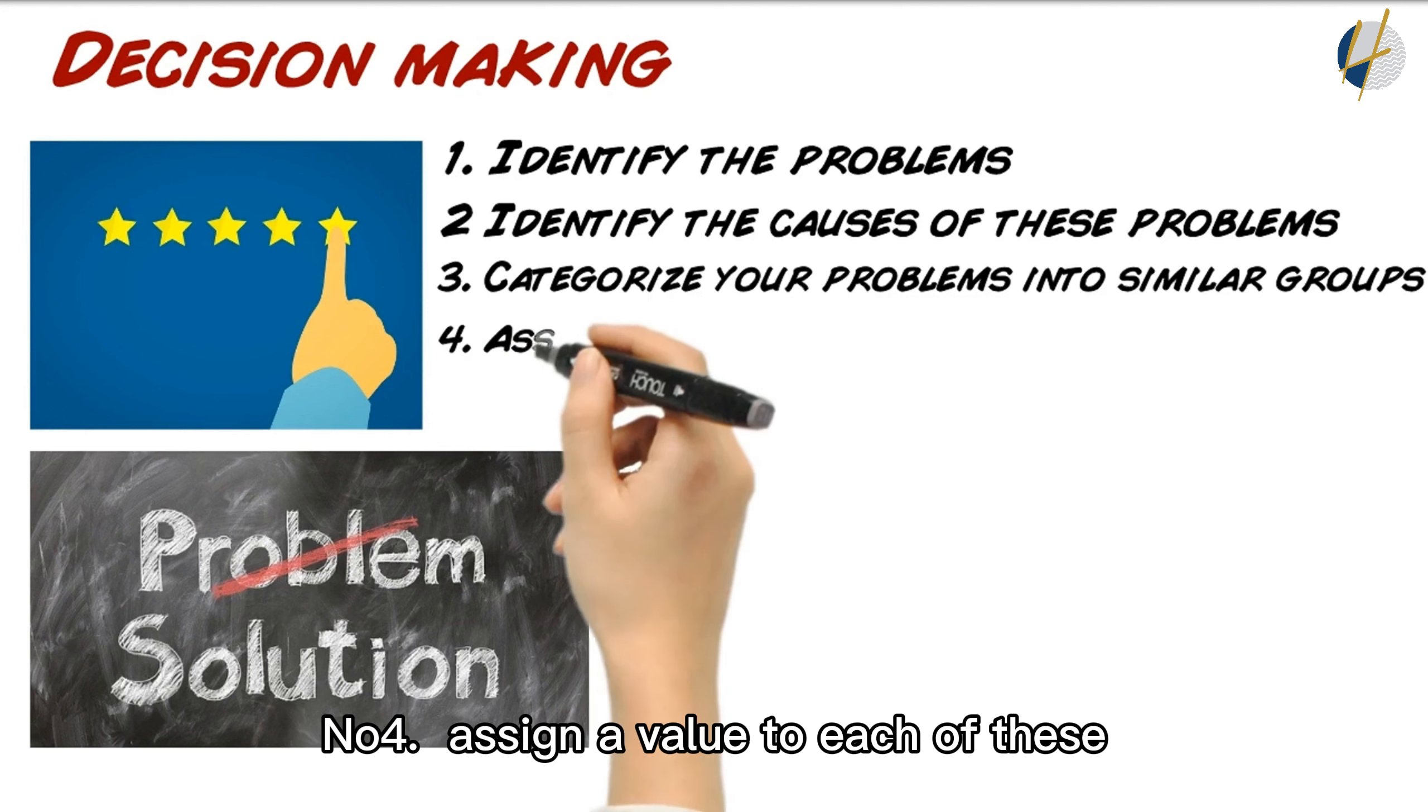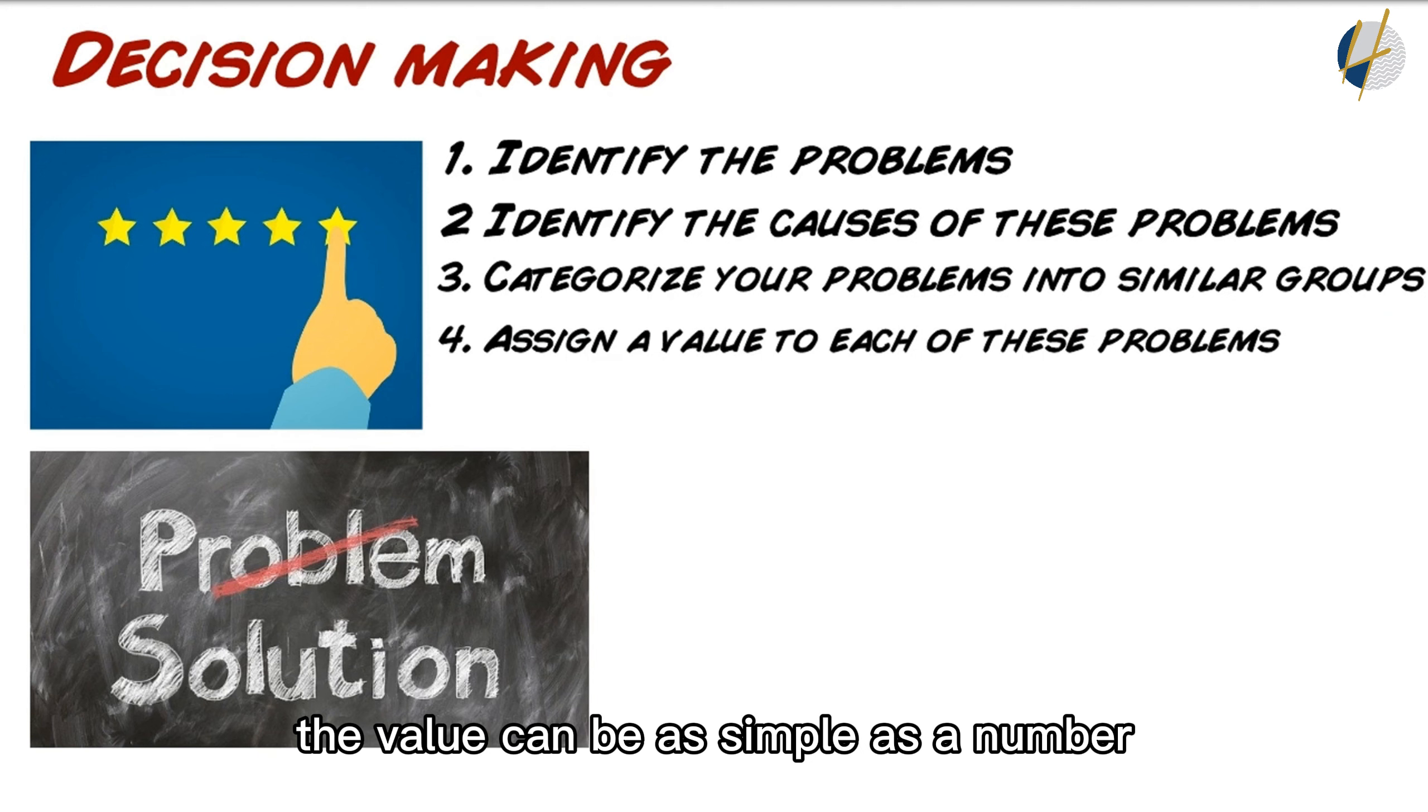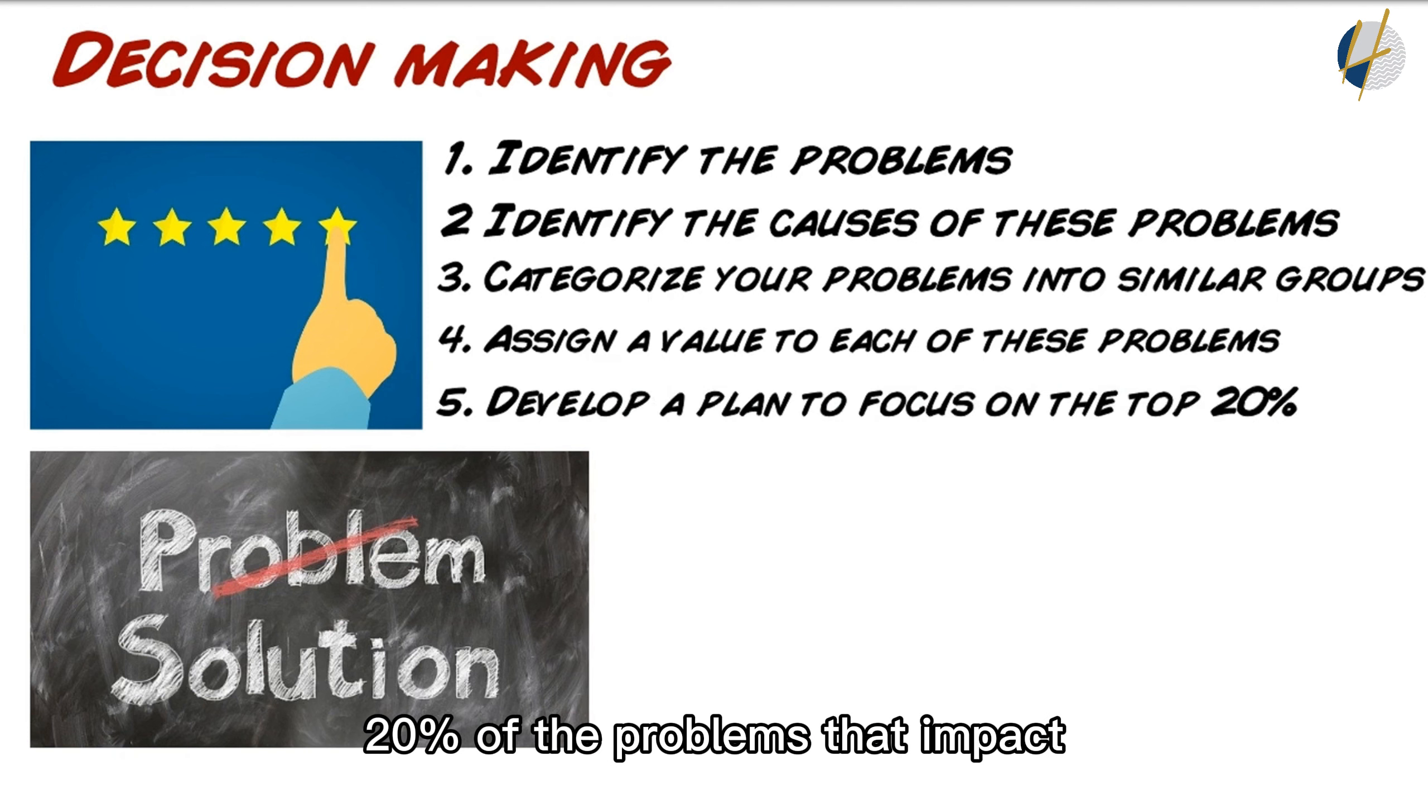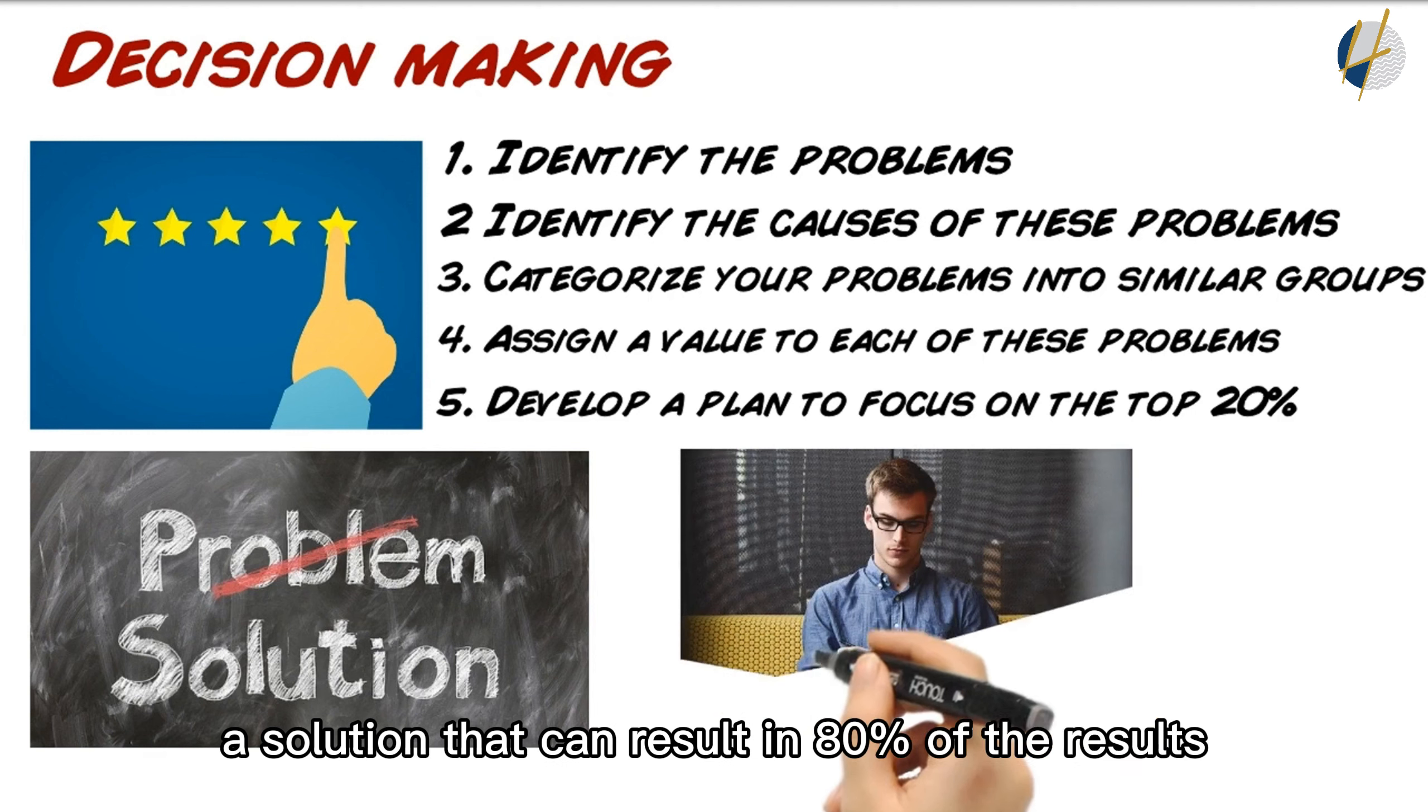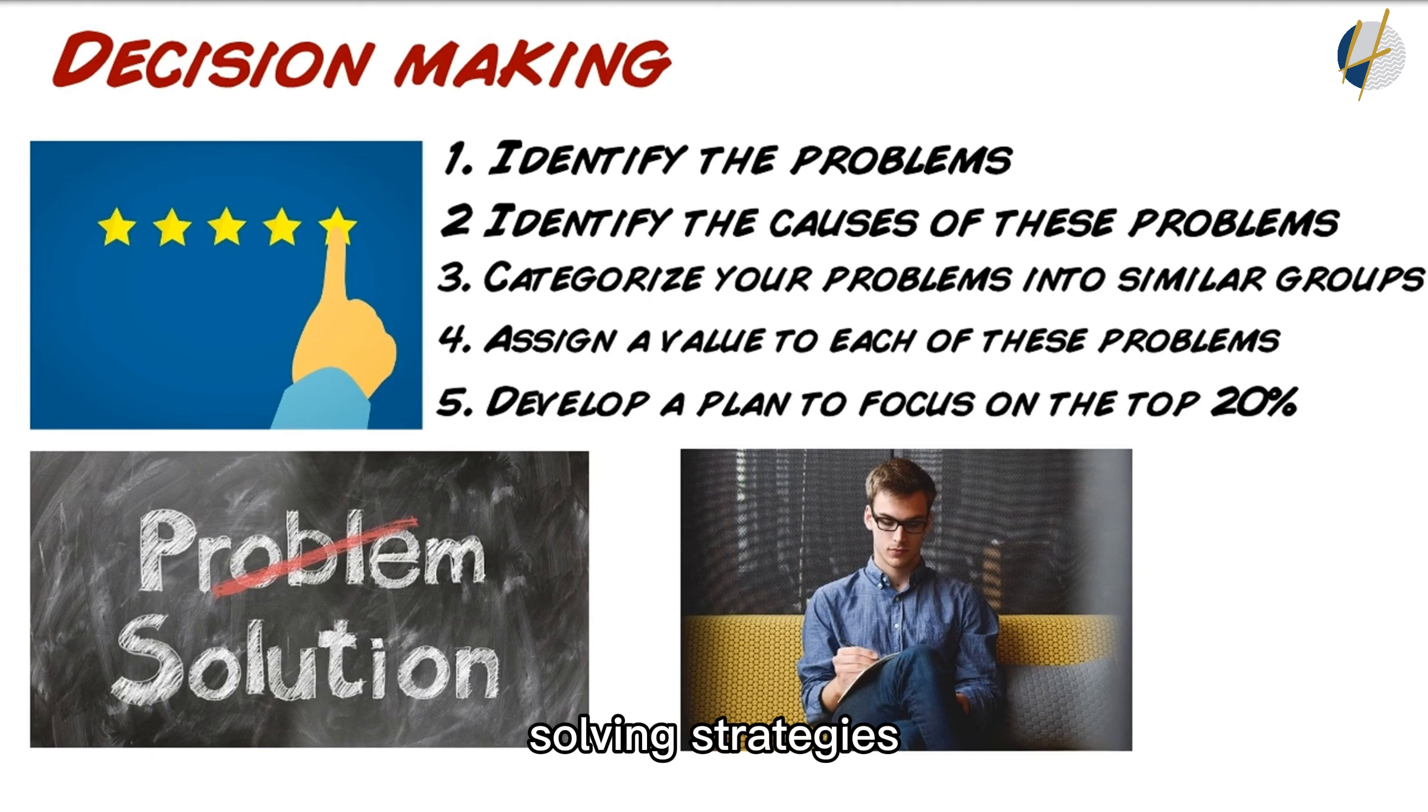Number four, assign a value to each of these problems based on the impact to the business. The value can be as simple as a number between 1 to 10 or actual monetary value to indicate the importance. Number five, develop a plan to focus on the top 20% of the problems that impact the business. The idea is that one solution can resolve multiple problems based on the values you assign to each problem. Calculate which ones are in the top 20%. Once you have identified the main problem, develop a plan to create a solution that can result in 80% of the results using problem-solving strategies.